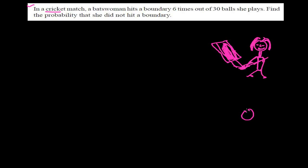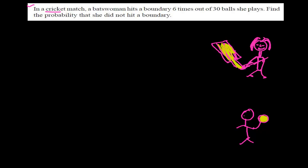And here is a bowler with a ball. It is a ball, and this is the bat. The batswoman will hit this ball when the bowler throws it. She will hit this ball, and the bowler throws 30 times. This bowler throws the ball 30 times.